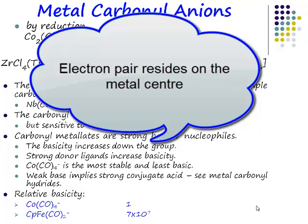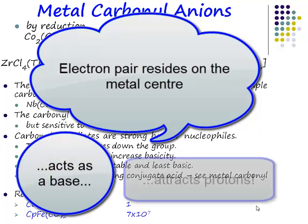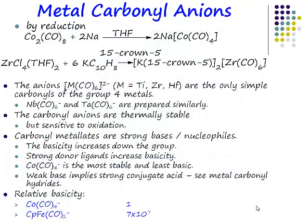If we have a pair of electrons centred on our transition metal, then it's going to act as a base. And if it acts as a base, it will attract protons. So you can take these metal carbonyl anions and protonate them, and when you protonate these metal carbonyl anions, what you will make — we'll see on a slide or two — are metal carbonyl hydrides.